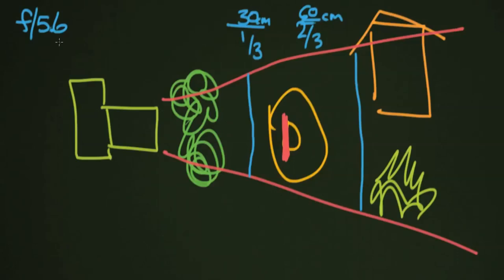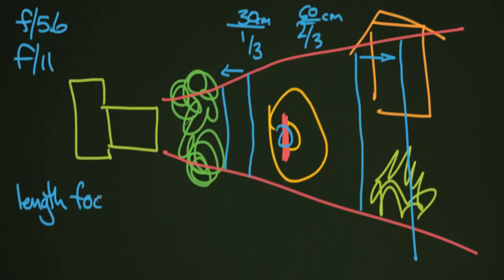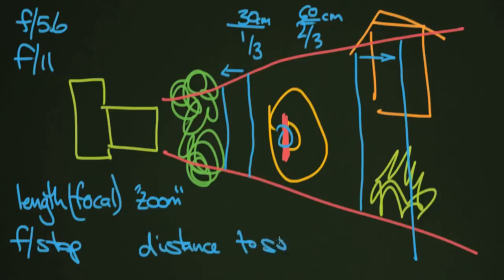And as you increase, so if you were to move up to f11, this one-third, two-third relationship would stay the same, but the lines that would define that would move back and forward. So it would move forward by one-third and it would move back by two-thirds, with the focus point staying here on the face of your subject as long as they're not moving. Things that affect this are the length of your lens, so your zoom, so focal length. Sometimes called your zoom. And you're also going to have your f-stop obviously is going to affect that. Also your distance to your subject.